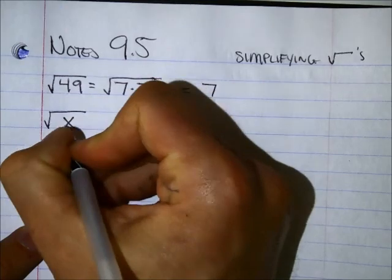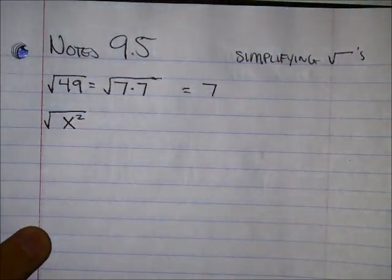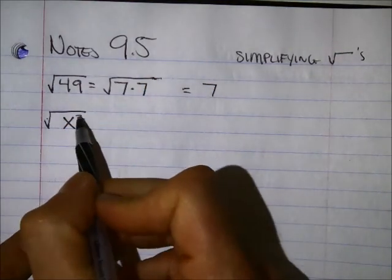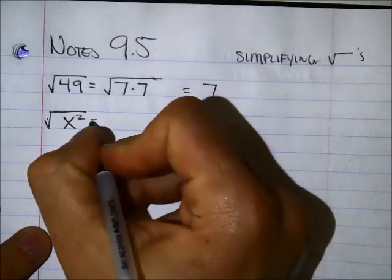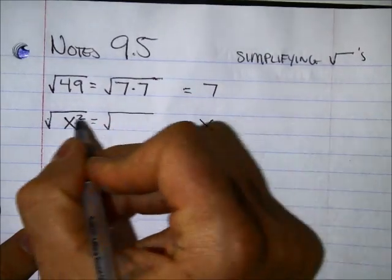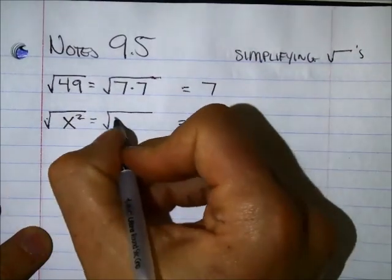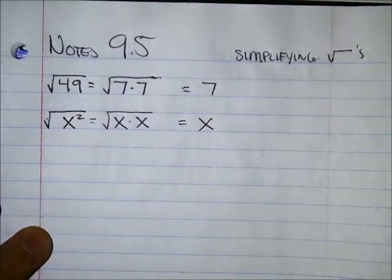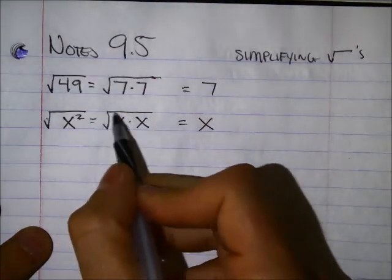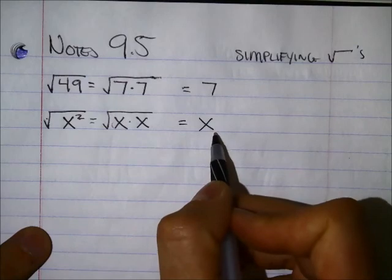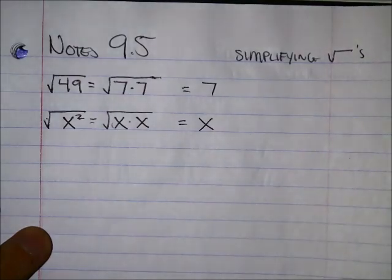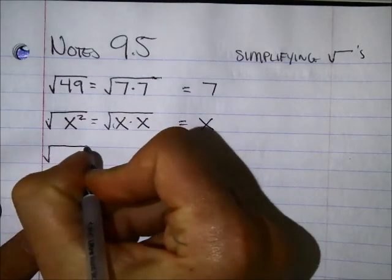I'm going to think of it like this: the square root of x squared. You know the square root and the squared sign cancel each other out. x squared is 2 x's multiplied together. The square root of 2 x's multiplied together is just an x. You can also think of regular numbers like this.